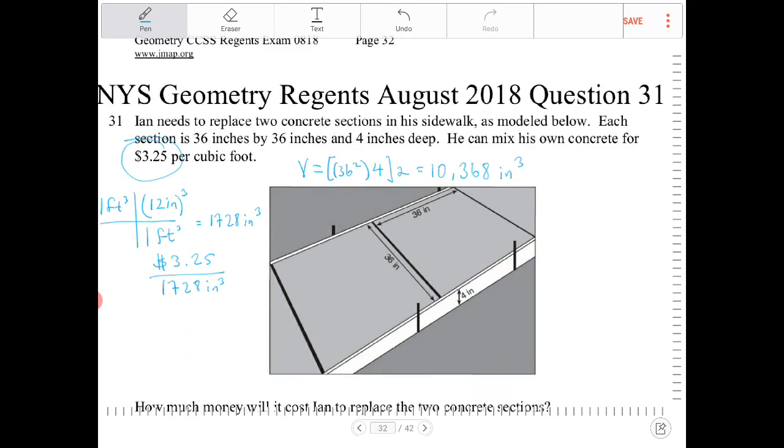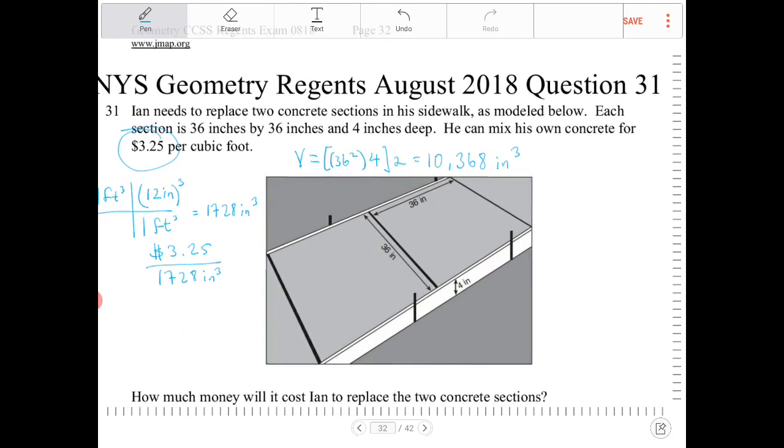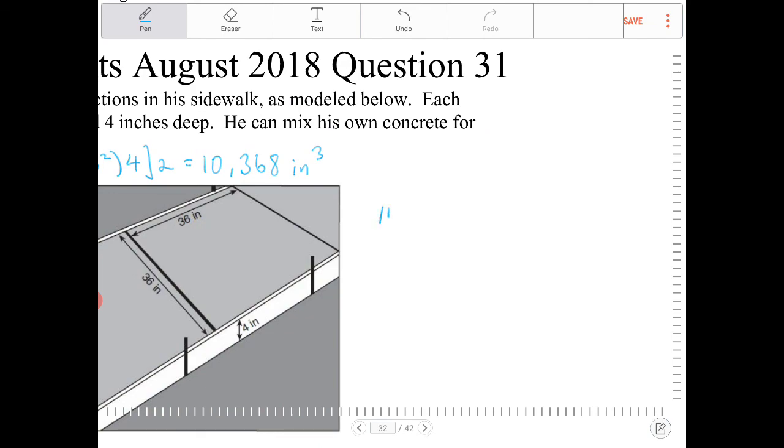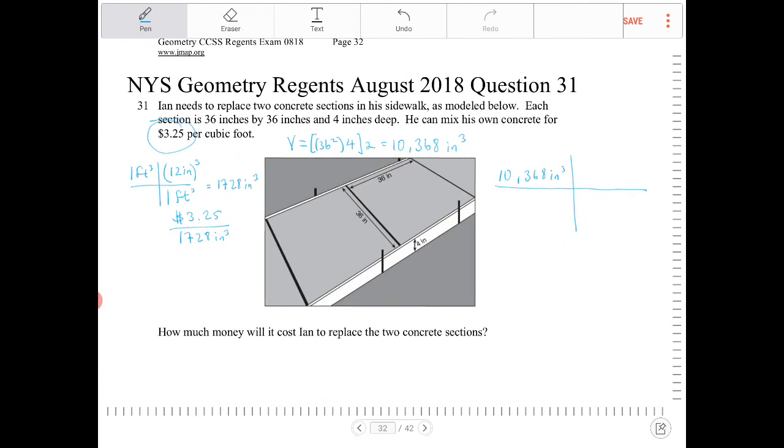So let's figure out what the cost is. To determine the cost, we're going to multiply 10,368 cubic inches. We want to cancel out the units of cubic inches and end up with a dollar figure. So the 1728 should go in the denominator, and the dollar figure should go in the numerator.